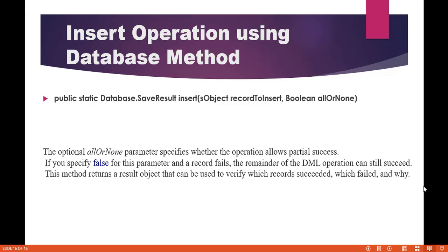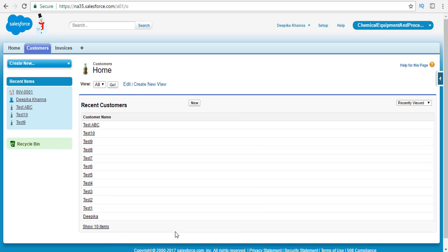Out of those 10, if one record has an issue, the rest of the nine records will be successful. This method returns a result object, and we can use this result object to verify which records were successful, which records were at fault, and what is the reason for the failure — using the SaveResult object.